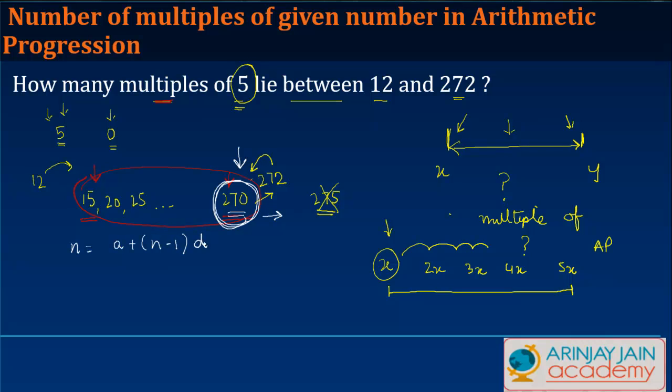What is the nth term here? 270, because that is the last term that we have. This equals a, which is 15, plus (n-1)d. n is what we need to find out, and d is the difference. The difference can be found out: 20 minus 15, which is 5.